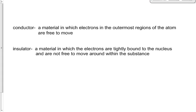The electrons, on the other hand, on some materials, it's pretty easy to get them to leave that atom. In conductors, it's easy to get them to leave. In an insulator, it's the exact opposite — the electrons are tightly bound to the nucleus and not free to move around. Understand that there's not a clear line between a conductor and an insulator — there are varying degrees of conductivity.